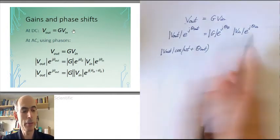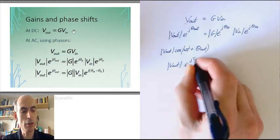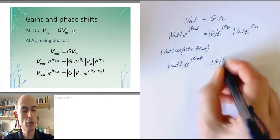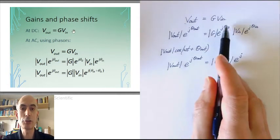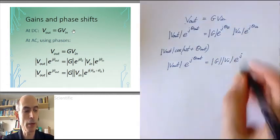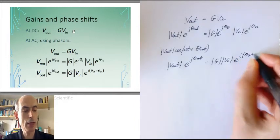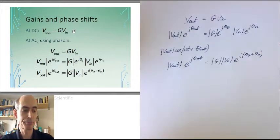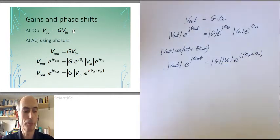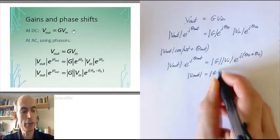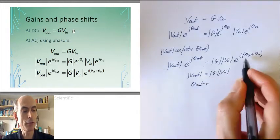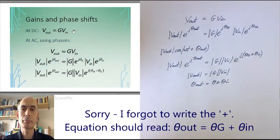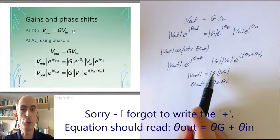A bit of rearranging gives us the magnitude of V_out times e to the j times the phase of V_out equals the magnitude of G times the magnitude of V_in times e to the j times the phase of the gain plus the phase of the input phasor. Now if these complex numbers are going to be equal, their magnitudes must be equal and their phases must be equal. So the magnitude of the output is the magnitude of the gain times the magnitude of the input, and the phase of the output is the phase of the gain plus the phase of the input. This is how we separate out the amplitude response from the phase response.